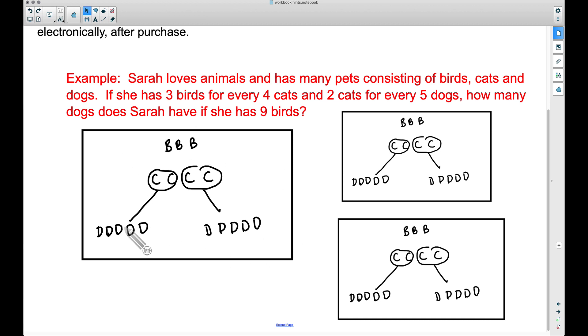And now we can just add up how many dogs we have: five, ten, fifteen, twenty, twenty-five, thirty. That's a whole bunch of dogs, but that is the answer to this problem: 30 dogs. Now let's take an approach without using the pictures. So three birds, let's think of it as equal to four cats.